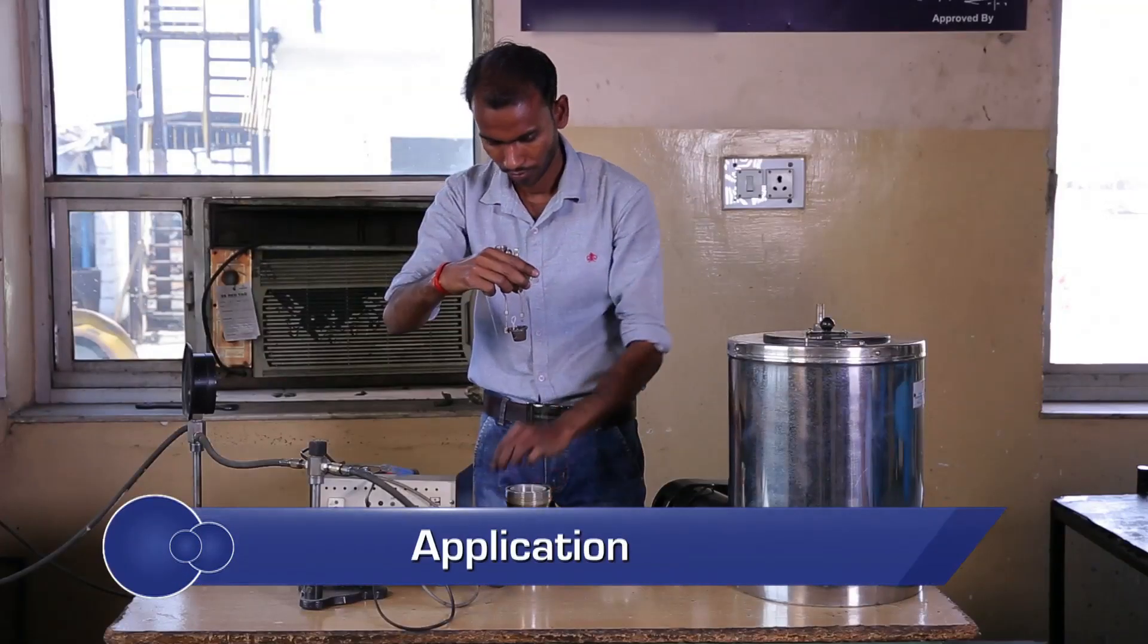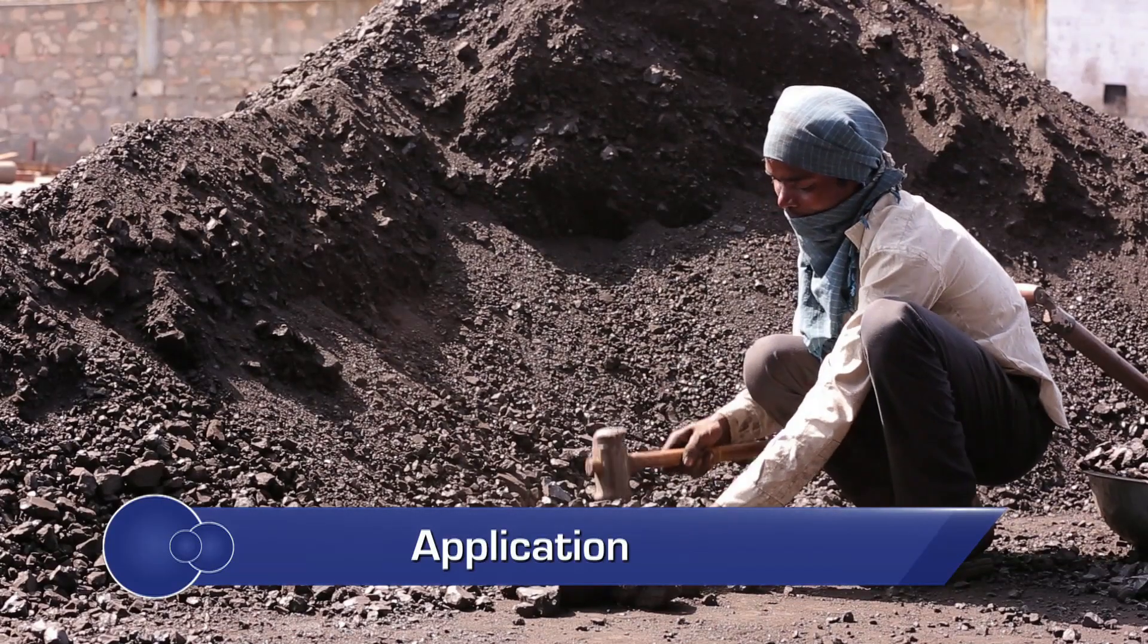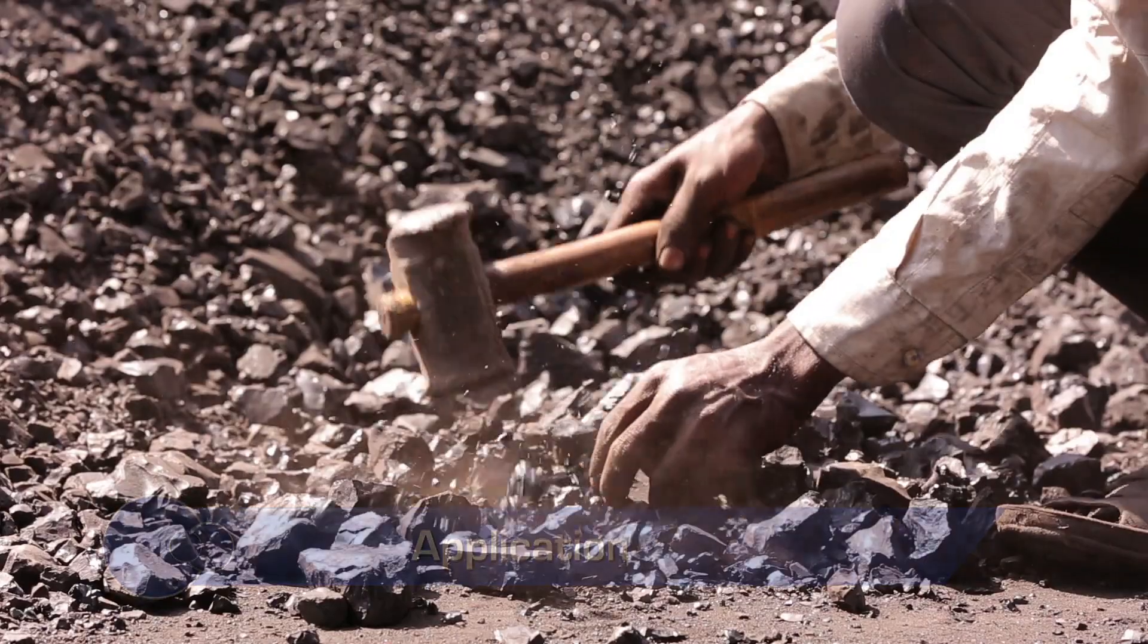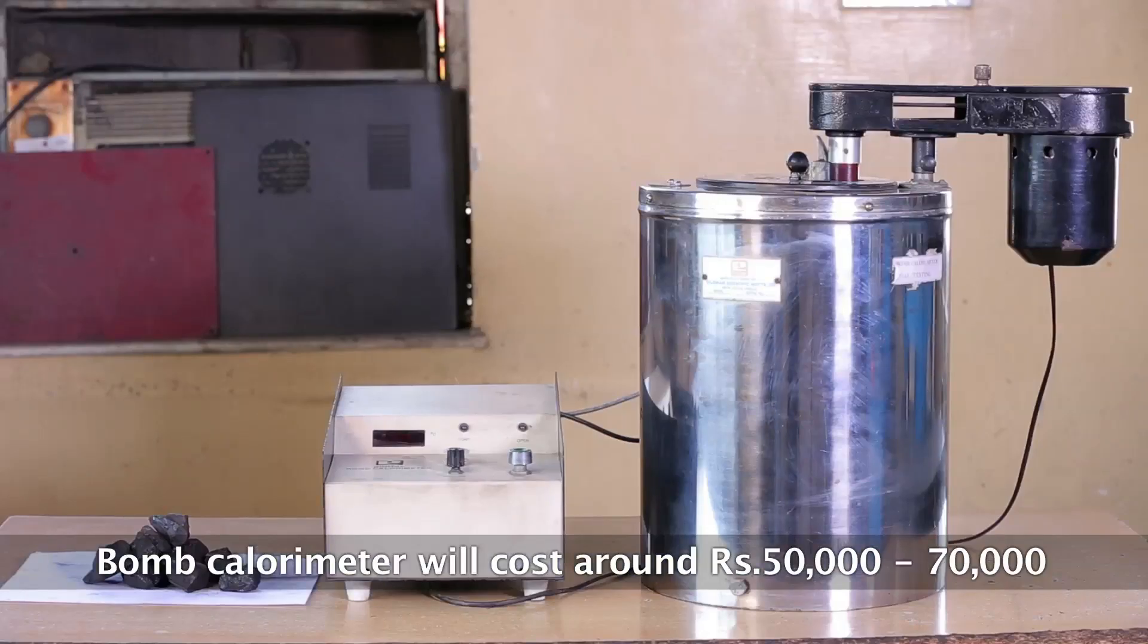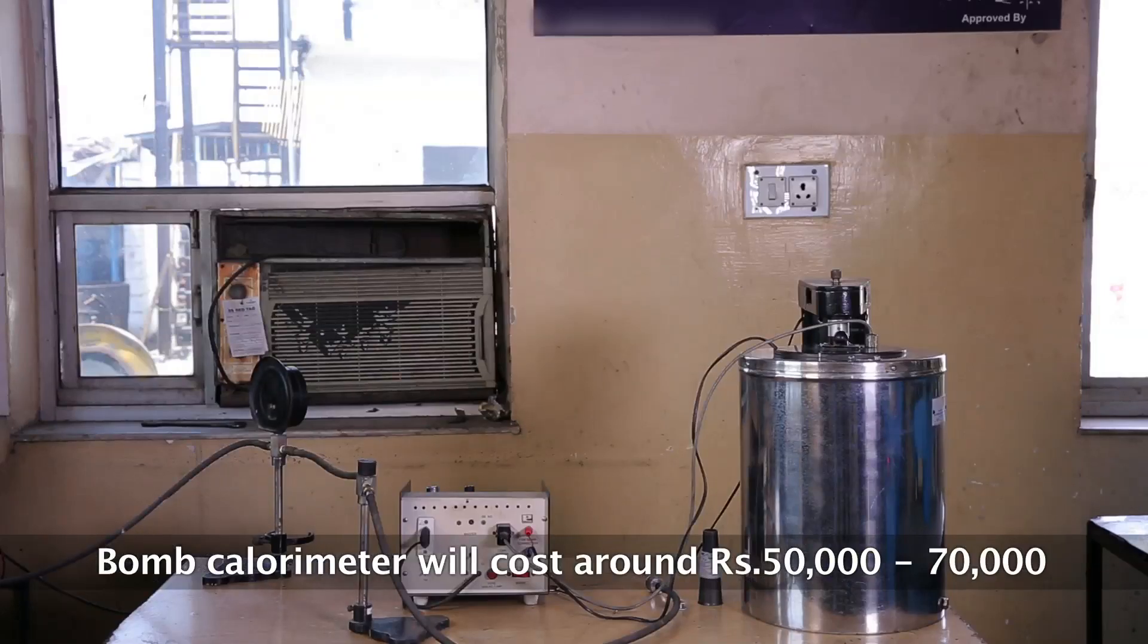A bomb calorimeter can be effectively used for determining GCV for any solid or liquid fuel. Normally, bomb calorimeter of this size would cost around 50 to 70,000 rupees.